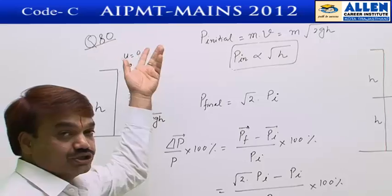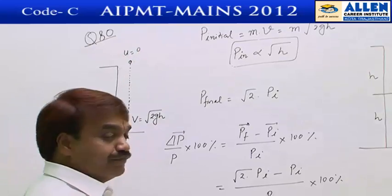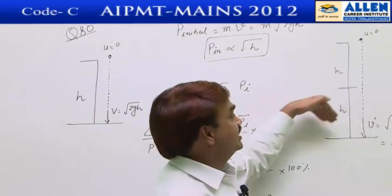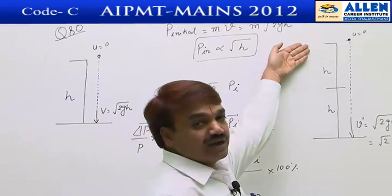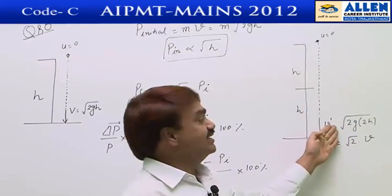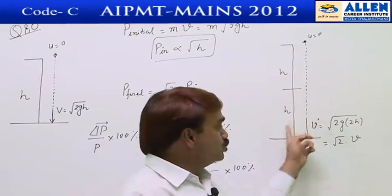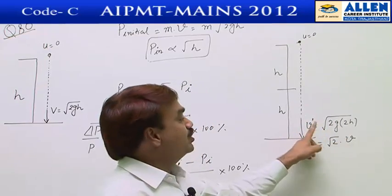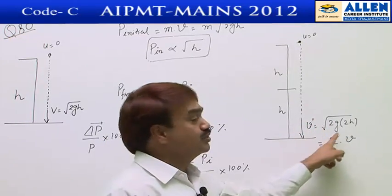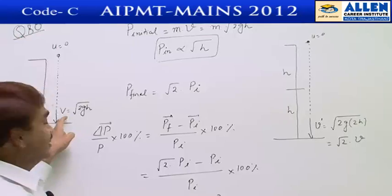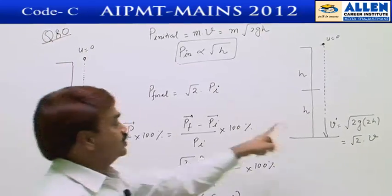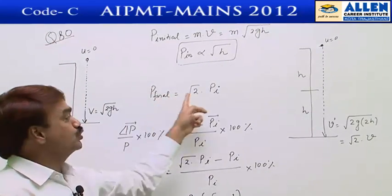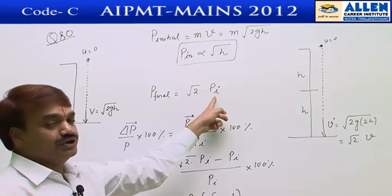The same particle is now dropped from 100 percent more than the previous height h, making the new height 2h. The new striking velocity is √(2g·2h), which equals √2 times the original striking velocity. Therefore, the final momentum is also √2 times the initial momentum.